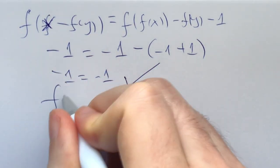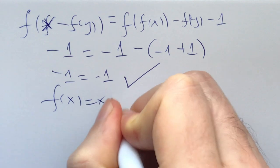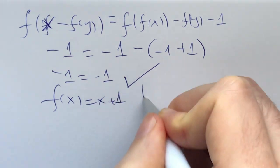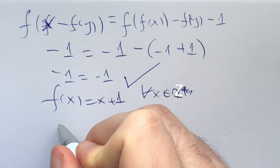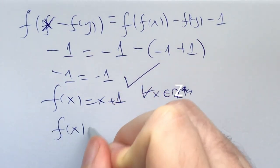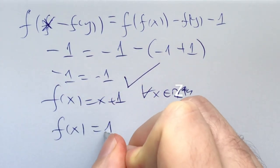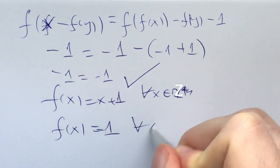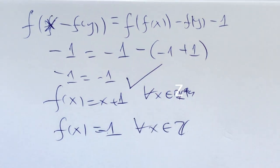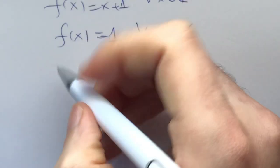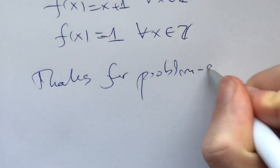The functional equation is solved. We have two solutions: f of x equals x plus 1 for all integers x, or f of x equals negative 1 for all integers x. And as always, thanks for problem solving!